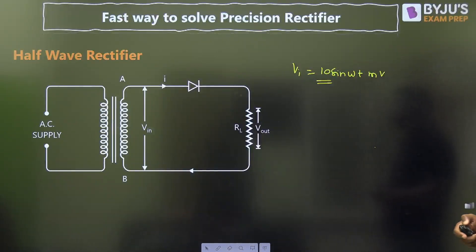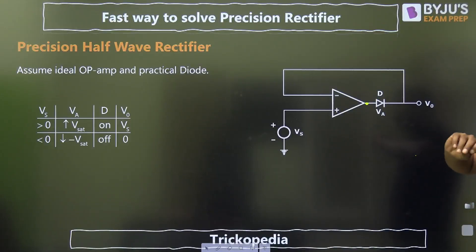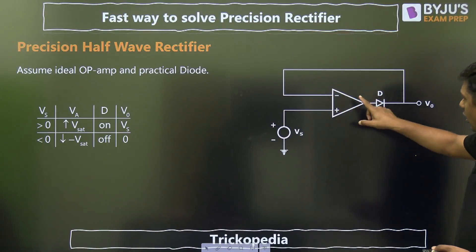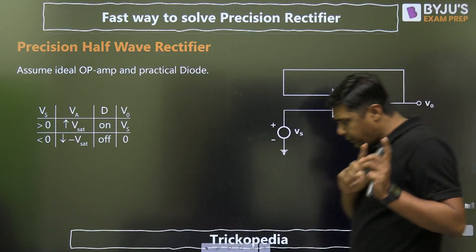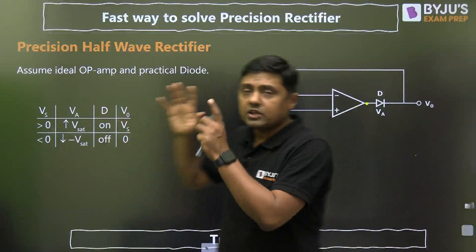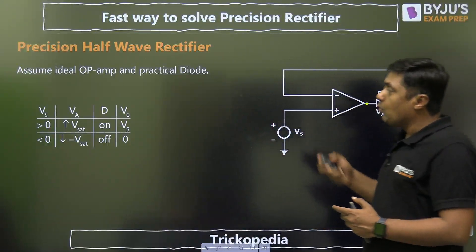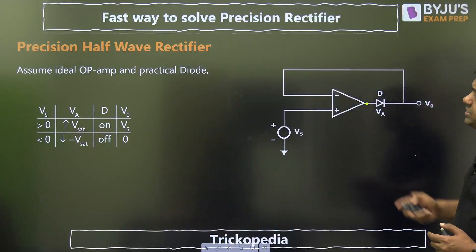Therefore, this is precision rectifier. We are assuming ideal operational amplifier, practical diode. In my previous session, that is super diode, I have explained the function of this circuit. Watch that. Now, what is the limitation of this?